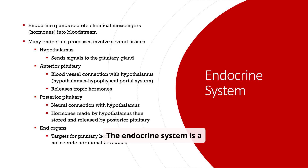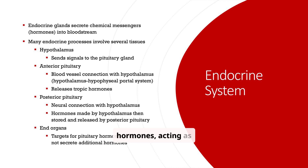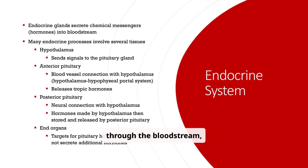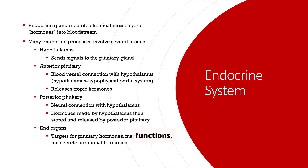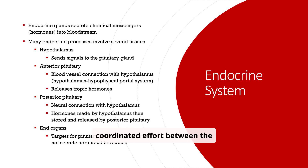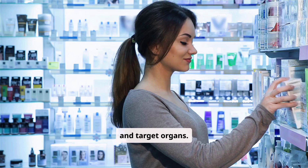The endocrine system is a complex network of glands that secrete hormones acting as chemical messengers. These hormones travel through the bloodstream influencing various bodily functions. Many endocrine processes involve a coordinated effort between the hypothalamus, pituitary gland, and target organs.